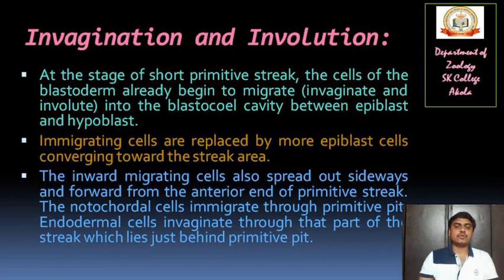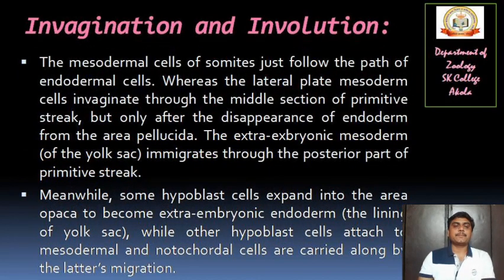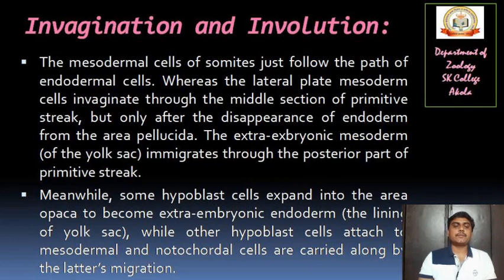The notochordal cells immigrate through the primitive pit. Endodermal cells invaginate through that part of the streak which lies just behind the primitive pit. The mesodermal cells of somites follow the path of endodermal cells, whereas the lateral splanchnic mesoderm cells invaginate through the middle section of the primitive streak, but only after the disappearance of endoderm from the area pellucida. The extraembryonic mesoderm of the yolk sac immigrates through the posterior part of the primitive streak. Meanwhile, some hypoblast cells expand into the area opaca to become extraembryonic endoderm — the lining of the yolk sac.